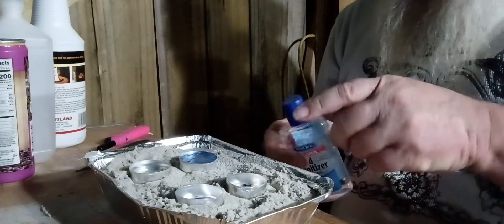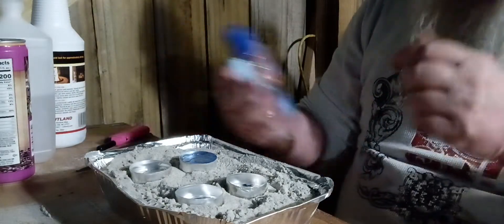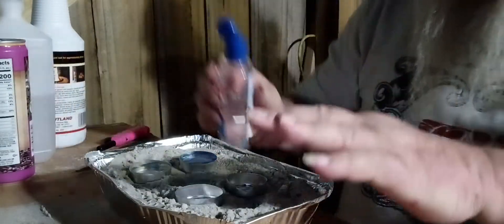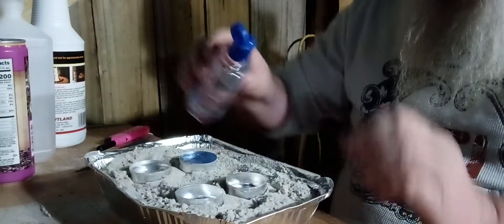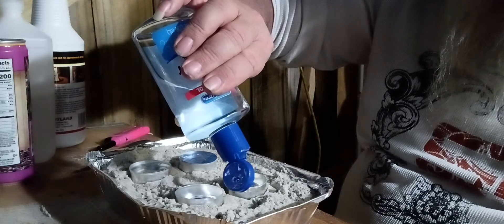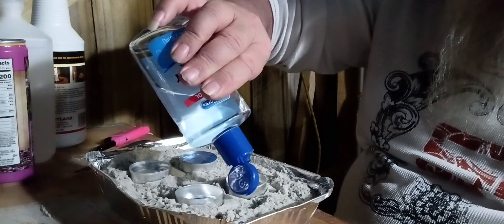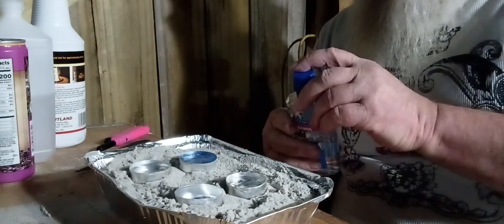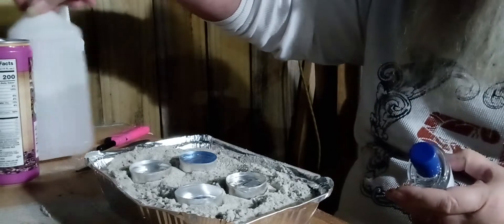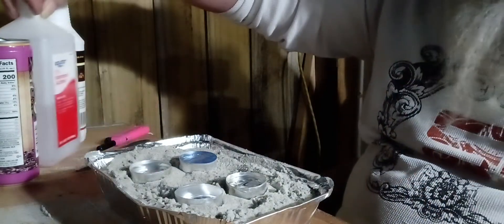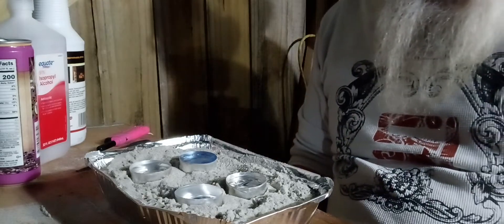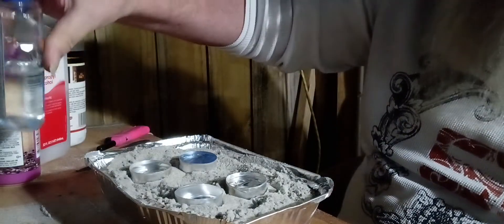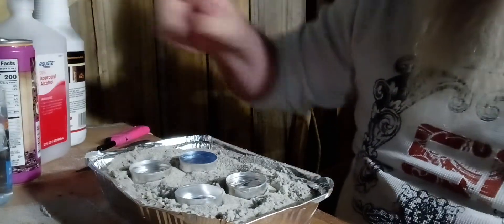Over here, we're going to use this Dollar Tree 70% hand sanitizer, 70% alcohol. This is the cheapest fuel out there. Well, not really, because this is about $4 for 32 ounces, and this is a dollar and a half for eight ounces. So this would be almost $5 for the same amount of fuel. And 91% burns a lot better.